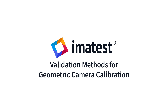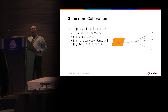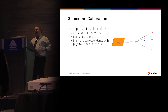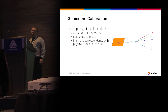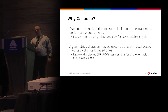A geometric calibration is simply a mapping of pixel locations to a pointing vector in the world. Inherently, it's just a mathematical model. Sometimes you may have physical interpretations of some of the parameters, such as focal length and principal point, but that is not a requirement in a model. So why do you want to calibrate?